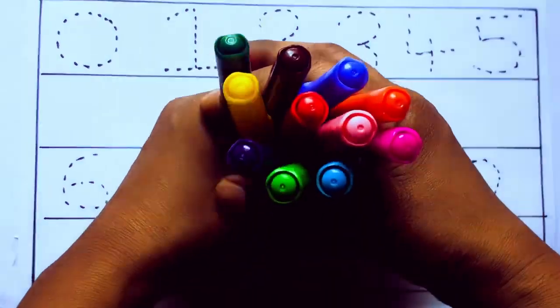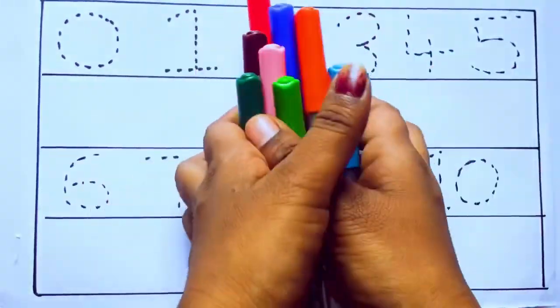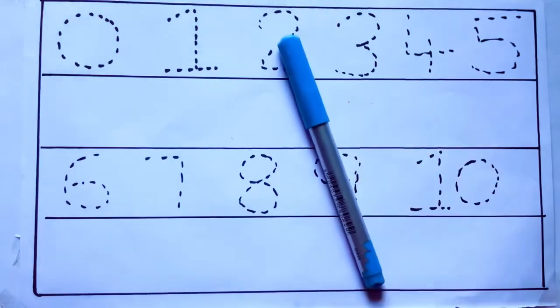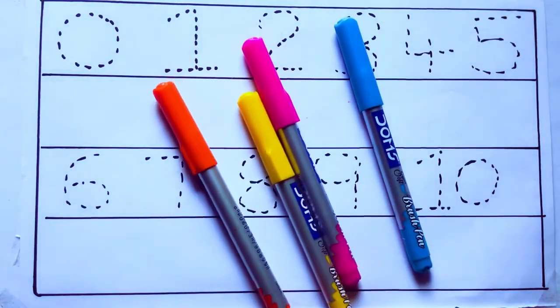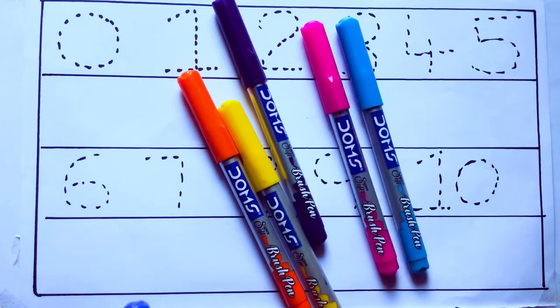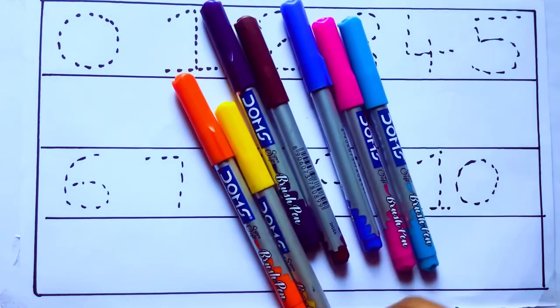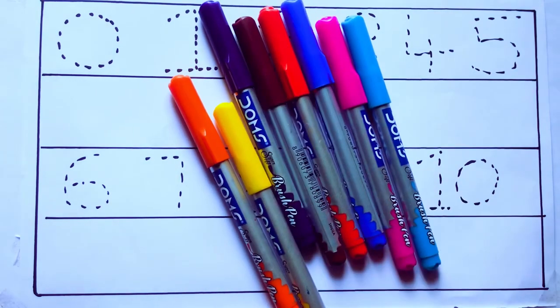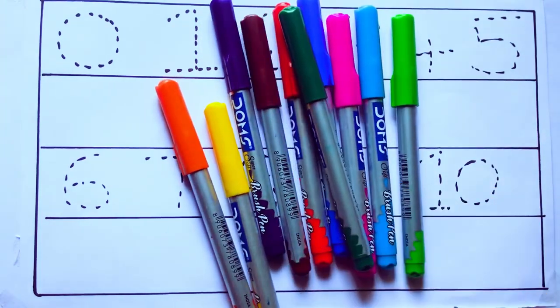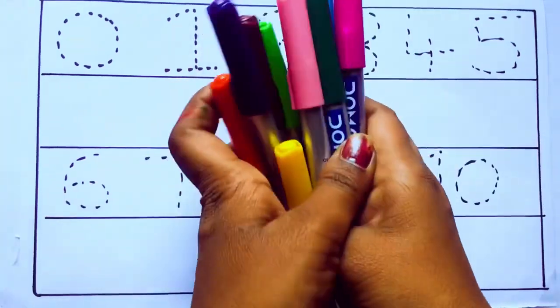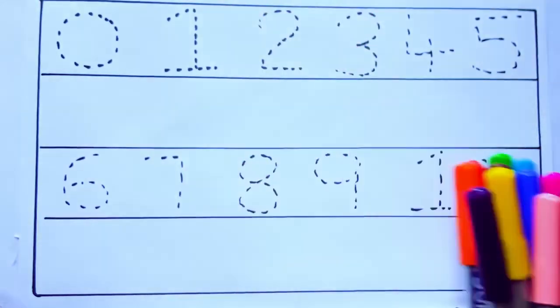Let's learn some colors. These are all the color pencils. Let's learn the names: sky blue color, pink color, yellow color, orange color, violet color, blue color, brown color, red color, green color, and pink color. Let's draw numbers.